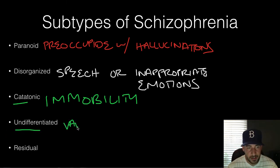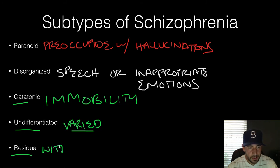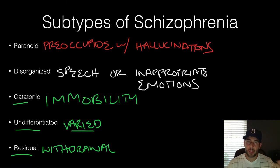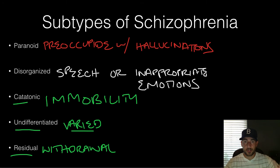Undifferentiated schizophrenia means you're schizophrenic but not any one particular type — you just have a range of these symptoms. Residual schizophrenia involves a lot of withdrawal after your hallucinations and delusions have disappeared. Schizophrenia is a break from reality, as opposed to dissociation, which we talked about earlier — dissociation is a break from yourself, where you don't feel like yourself. Schizophrenia is you breaking from reality — what's really going on in the world around you.